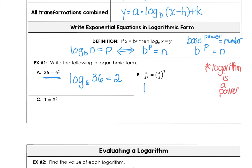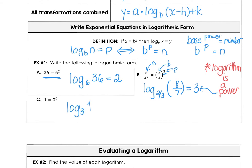In example b, we identify the base, the power, and the number that is produced. Log base b of a number equals the power. A logarithm is a power: 3 is the power here. And log base 3 of the number equals the power.